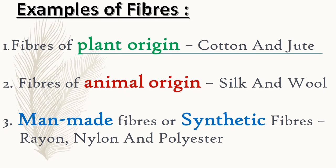To understand the types of fiber, let us first go through some examples. Number one, fibers of plant origin: cotton and jute. Number two, fibers of animal origin: silk and wool. Number three, man-made fibers or synthetic fibers: rayon, nylon, and polyester.